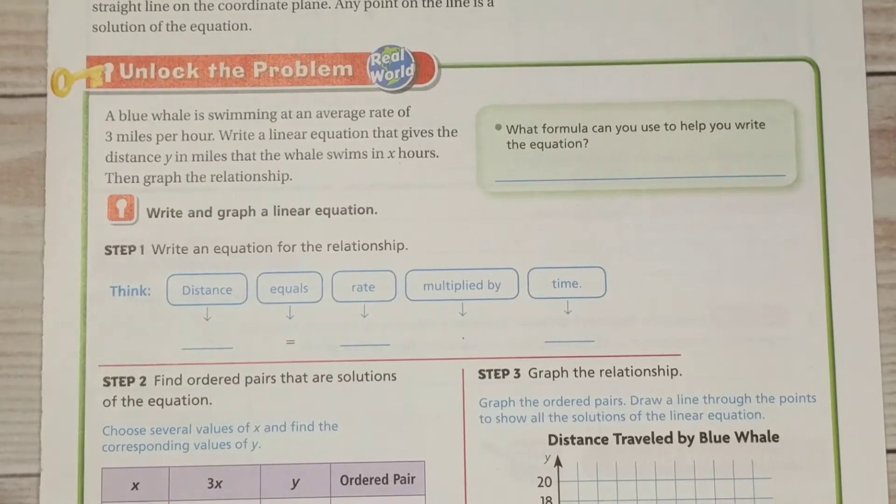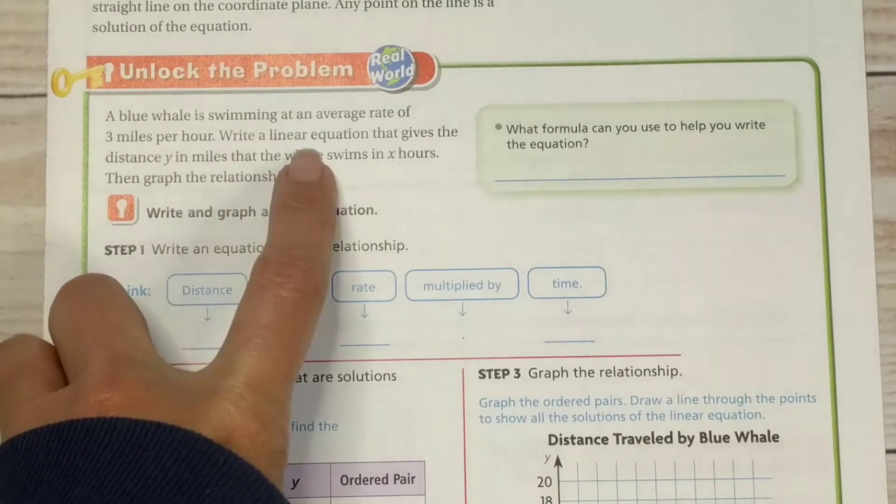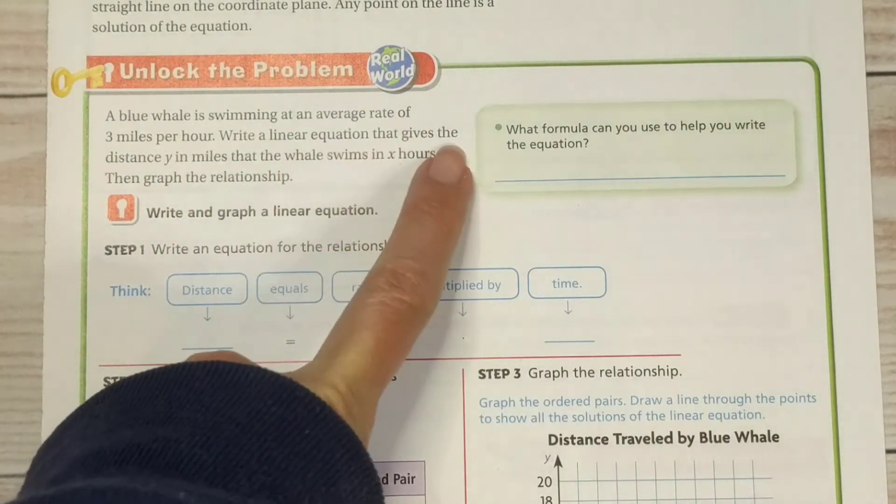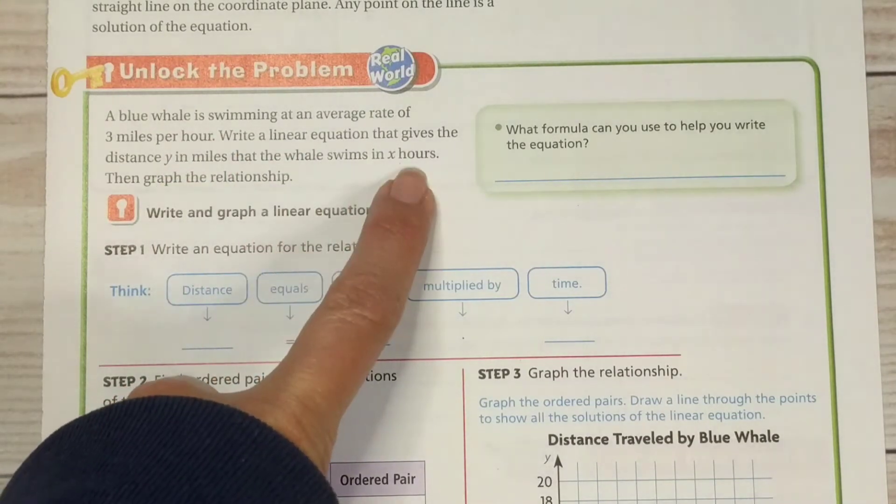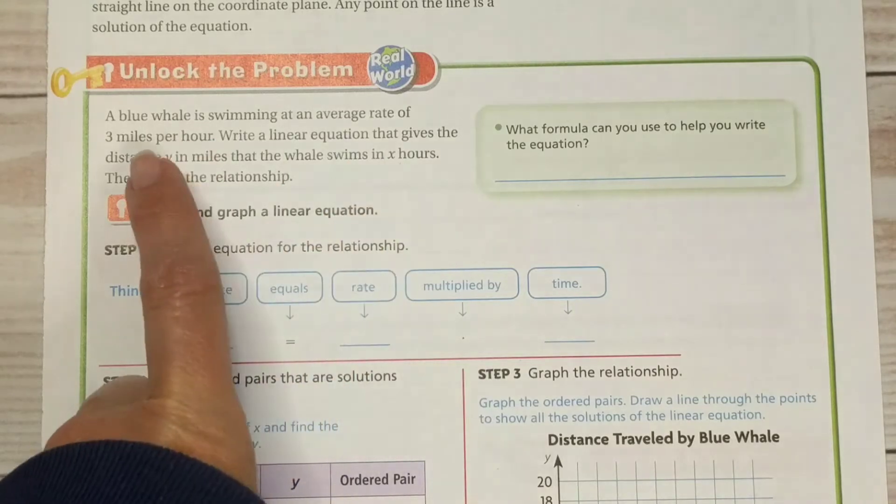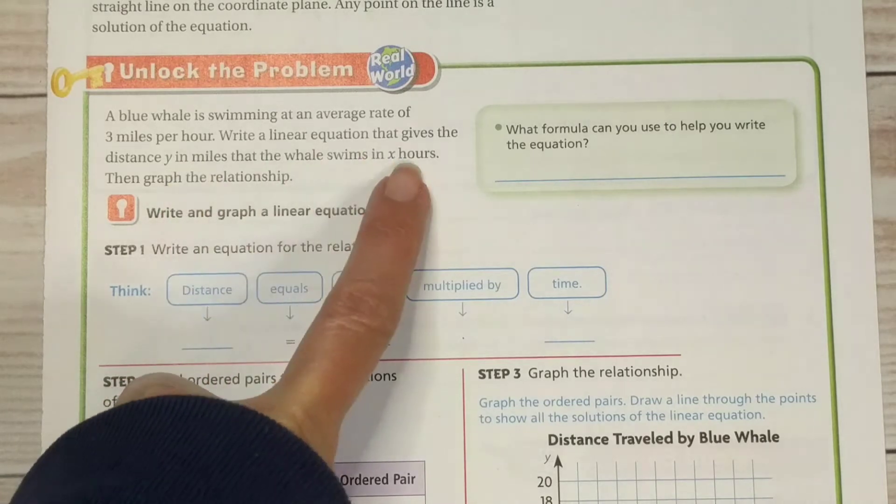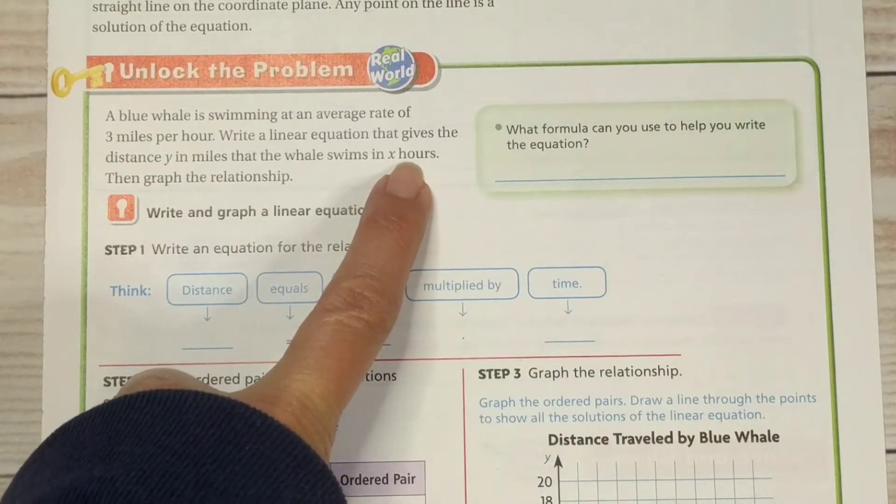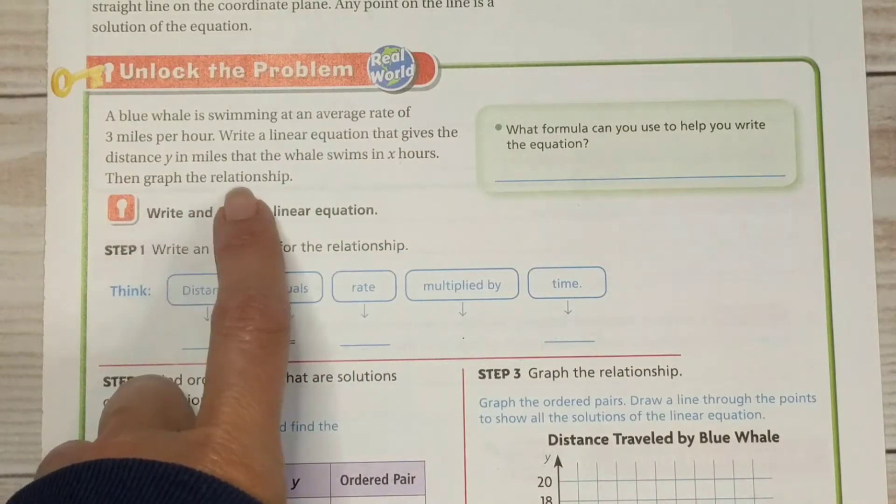We have a blue whale is swimming at an average rate of 3 miles per hour. Write a linear equation that gives the distance in y in miles that the whale swims in x hours. So again, this is our dependent variable. How far the whale is going to swim depends on how many hours it swims. Then graph the relationship.